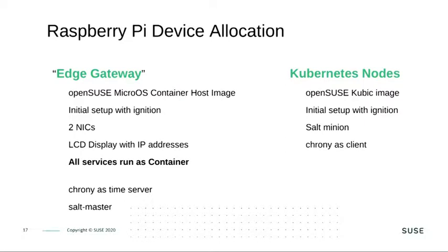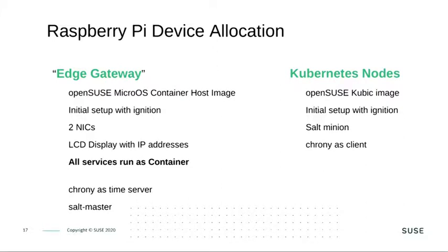For the Kubernetes nodes, we will use the OpenSUSE Kubic images. OpenSUSE Kubic is our certified Kubernetes distribution. As the host OS, OpenSUSE MicroOS is used. The initial setup will also be done with ignition. Ignition will set up the salt minions and make sure that they connect with the salt master, and it will use chrony as client.